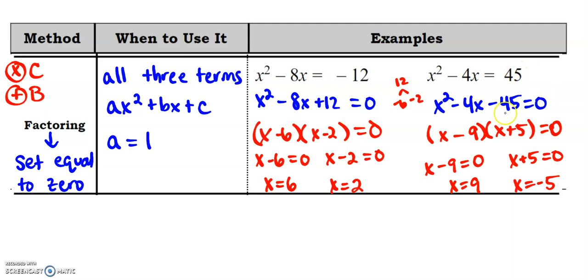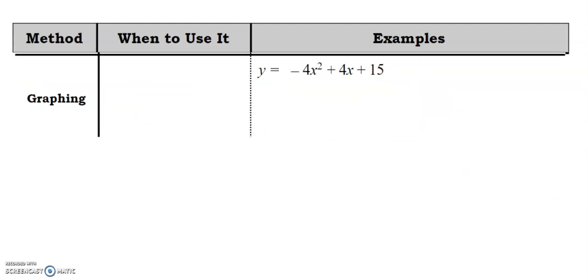The other one I also had to set equal to zero before I could solve by factoring. And then once I factored it, I got these two numbers, nine and negative five. If you need more explanation on that, please do not hesitate to ask. All right.